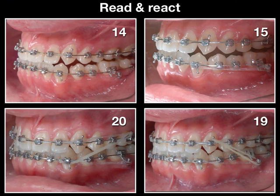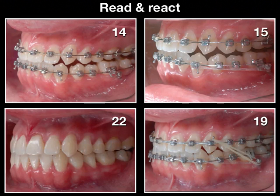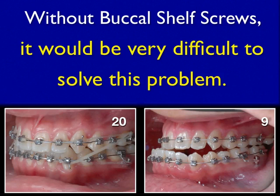Here we achieve one millimeter of overjet and also correct the bite. Finally, we want to settle the occlusion. You can see the power chain retracting the anterior teeth, and we hooked up the class 3 mechanic elastics. By 22 months, we produced a result like this.